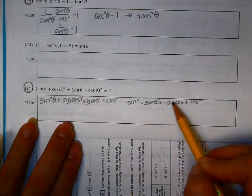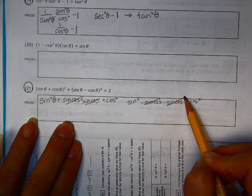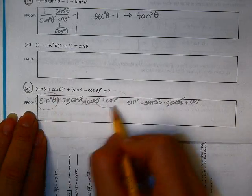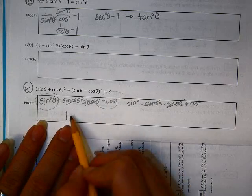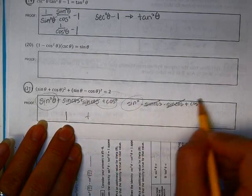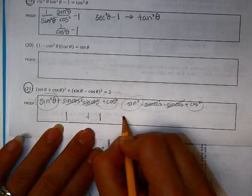That one goes with that one. That one goes with that one. And then these two is equal to 1. Sine squared plus cos squared is equal to 1. And then these two are equal to 1, which, happy days, is equal to 2.